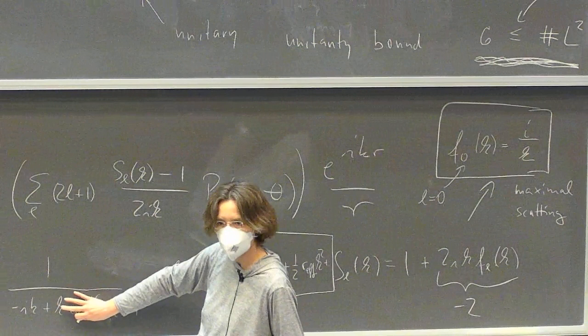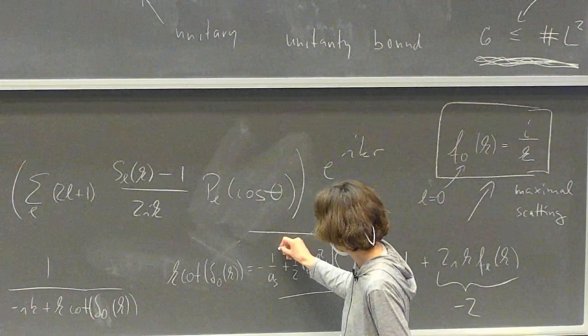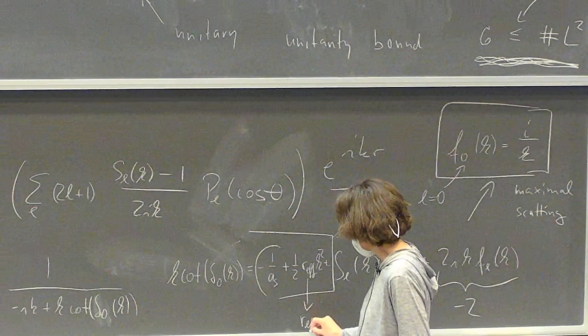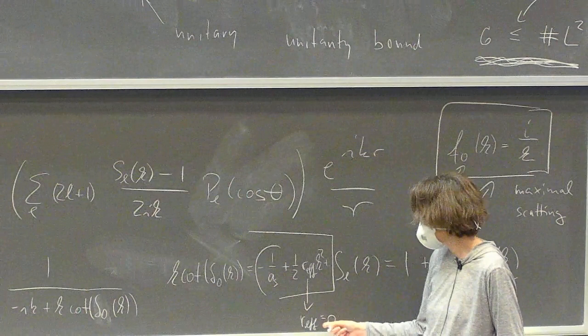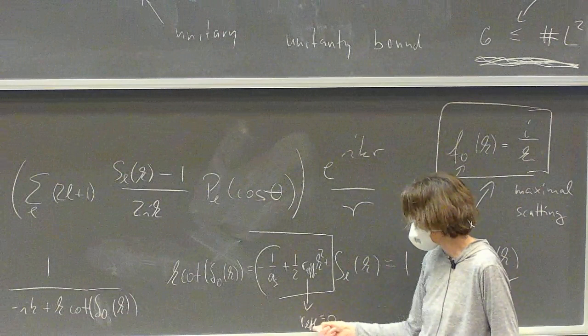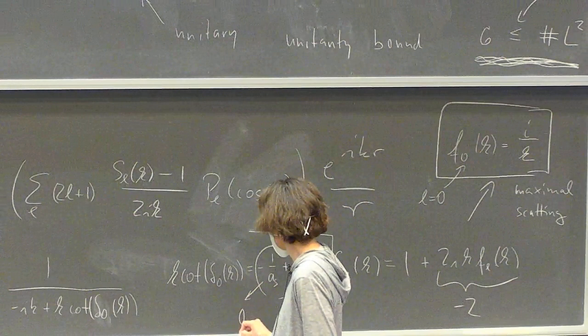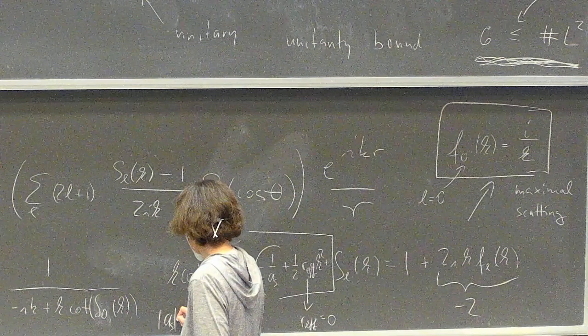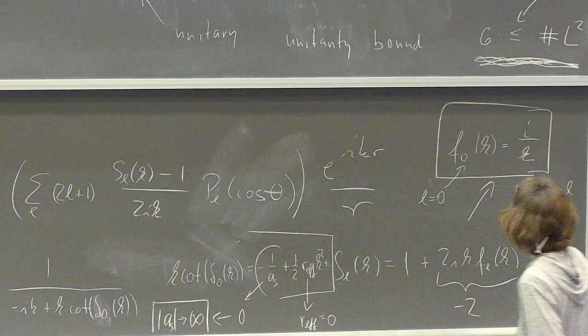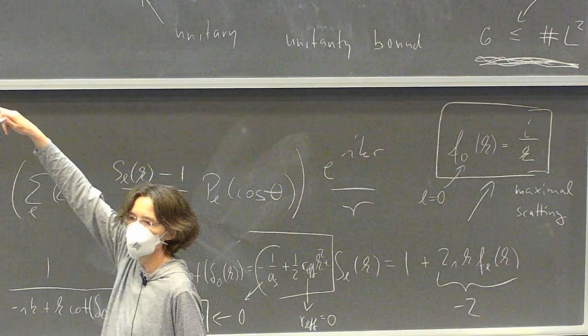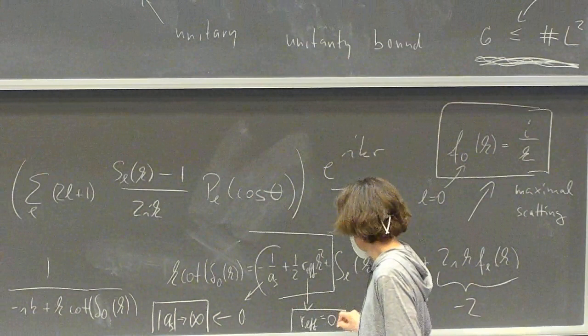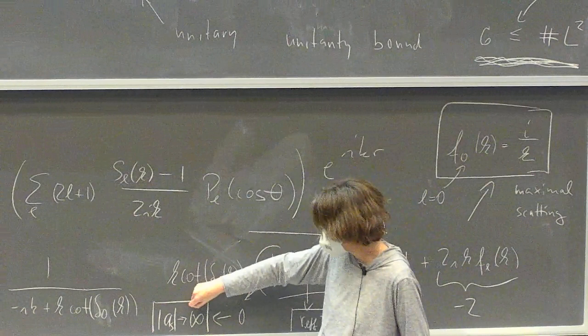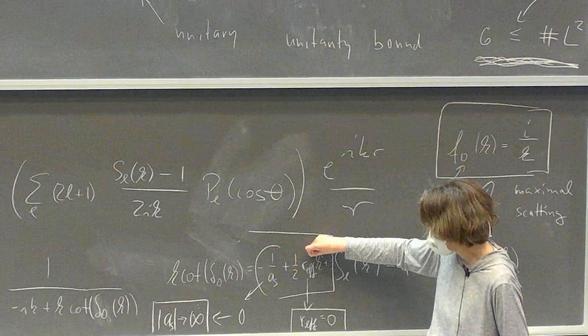The point is: what I argued we want is for this part to vanish. Looking at this expression, if we set the effective range to zero — no effective range corrections — then 1 over A_S has to go to zero, which in turn means the S-wave scattering length should be infinitely large for us to have maximal scattering and to be sitting at unitarity.